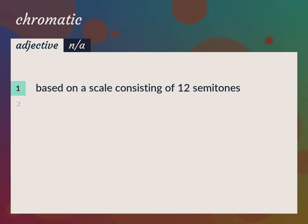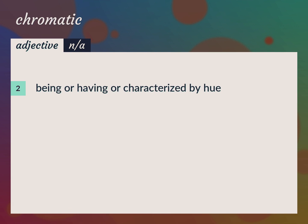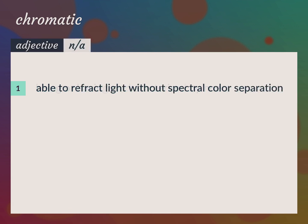Based on a scale consisting of 12 semitones — a chromatic scale. Being or having or characterized by hue. Able to refract light without spectral color separation — a chromatic lens.